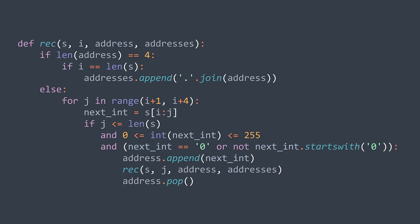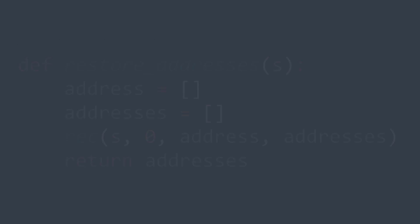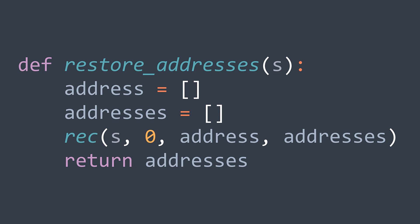That was the recursive function. We also need a non-recursive wrapper where we create the address array and the addresses array, then call the recursive function with I equal to zero to start from the beginning. This call fills the array of valid addresses, and we return it.